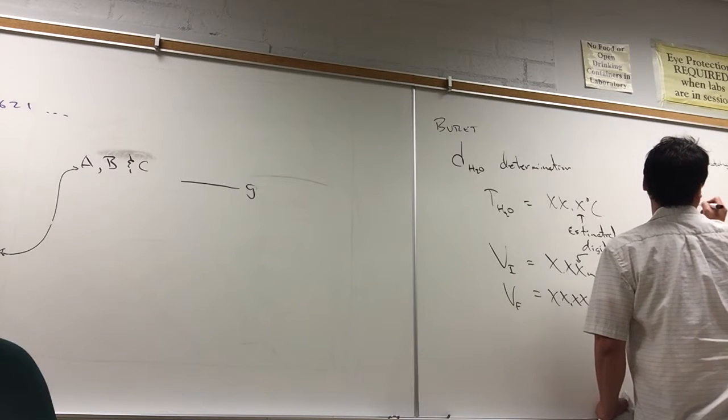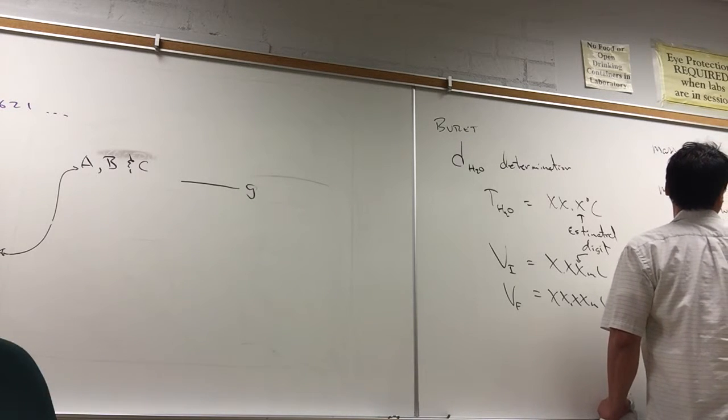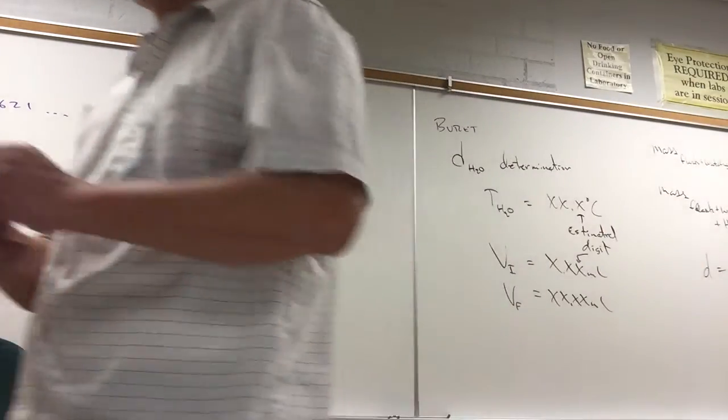And then we're going to have the mass of the flask plus watch glass plus water. xxx point xxx xxx grams. And then we can calculate the density. The density is going to be the mass of water. Mass of water, we're going to know to, it's 20 milliliters, so it's going to be about 20 grams. We're going to know this to six sig figs divided by the volume of water. The volume of water, we're only going to know to how many sig figs. After the subtraction, we'll only get four sig figs. And so we'll be able to calculate or experimentally determine the density to how many sig figs? Four sig figs. So we'll figure out the density of water to four sig figs. That's using the burette.